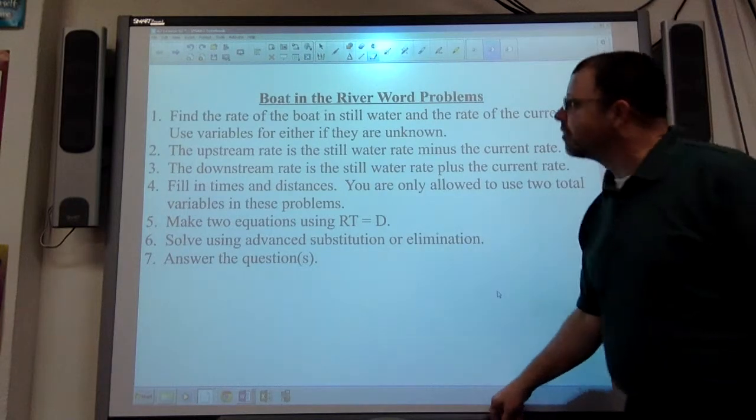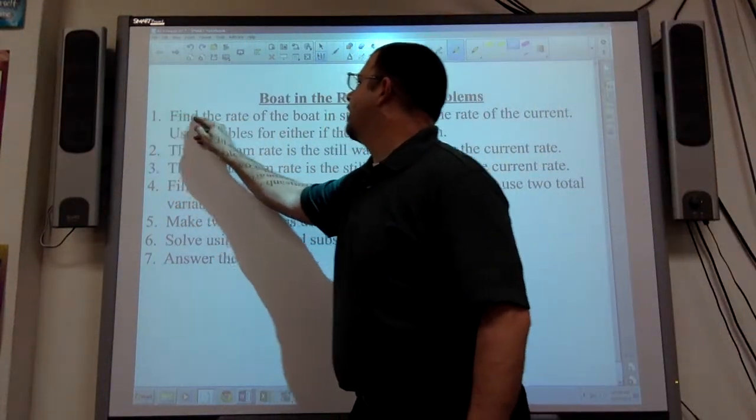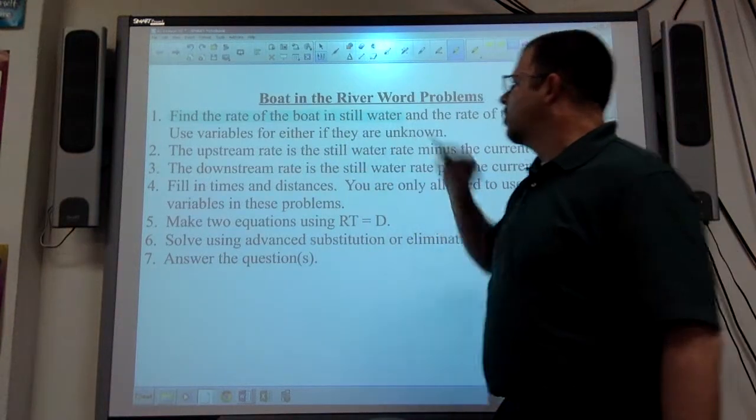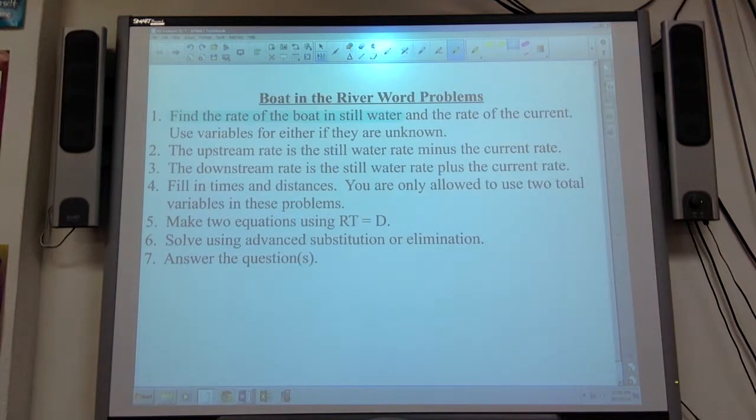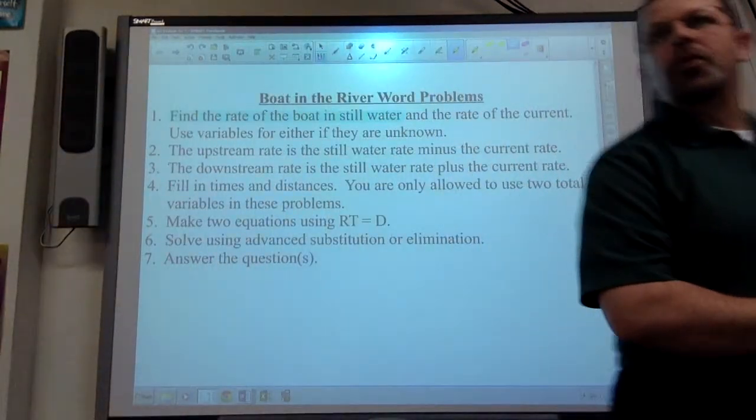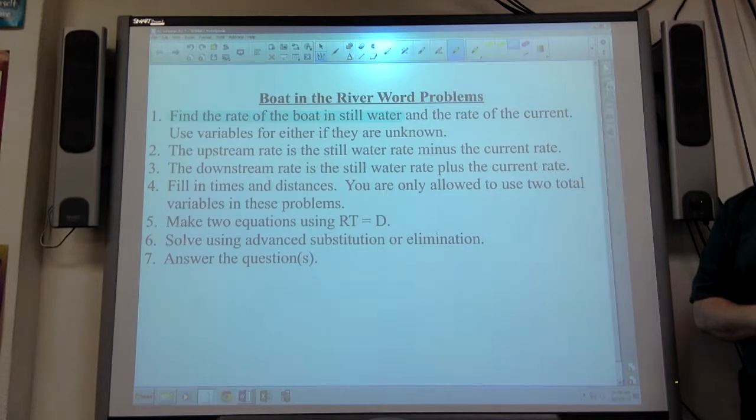The first priority in these problems, and it's very important, is to establish how fast the vehicle can go when nothing else is acting upon it. They give this information several different ways. The first way they'll say something like, the speed of the boat on a lake is this. Lakes don't have currents, so therefore that's the speed of the boat in still water.